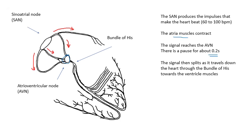Then the signal reaches the atrioventricular node, or AVN. One interesting thing it does is produce a delay — about 0.2 seconds before the signal carries on. Why should there be a delay? Because we want the atria to contract before the ventricles. The blood comes into the atria, gets squirted into the ventricles, and then the ventricles contract. You should also revise the PQRS from unit one — the ECG with the P wave, the QRS complex, and the T wave — as this is very relevant to that.